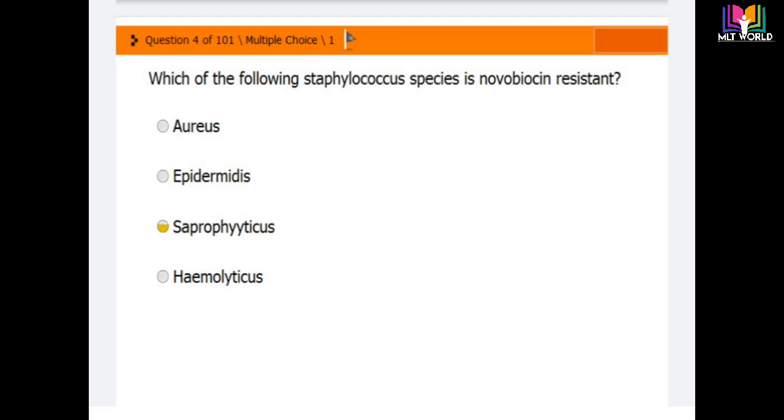Question number four: Which of the following staphylococcus species is novobiocin resistant? Options are Staphylococcus aureus, Staphylococcus epidermidis, Staphylococcus saprophyticus, and Staphylococcus hemolyticus. The correct option is Staphylococcus saprophyticus. Saprophyticus is resistant to novobiocin.